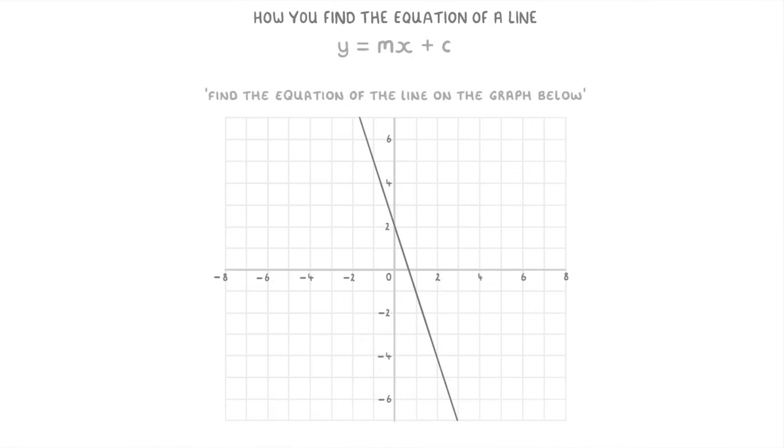The easiest thing to spot is that the line crosses the y-axis at y equals 2, which tells us that c must be 2.